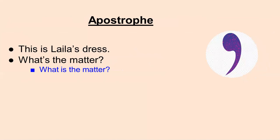Now come to apostrophe. Here are two sentences. The first is a possessive phrase — the apostrophe is used in the possessive case. The second sentence is 'What's the matter?' meaning 'What is the matter?' — here the letter 'i' has been omitted and instead an apostrophe has been used. Now you are able to know why and where we use the apostrophe.